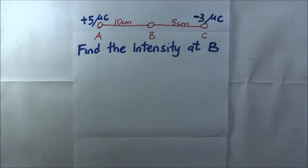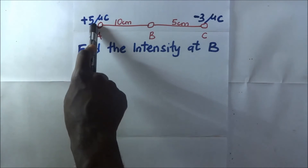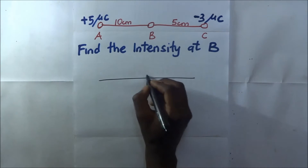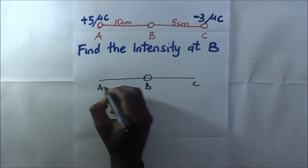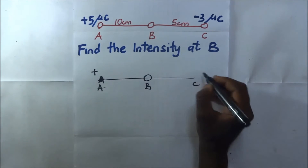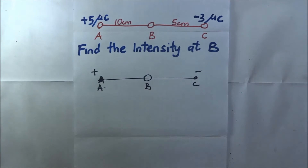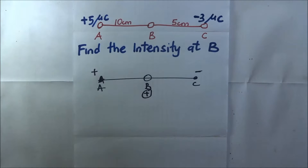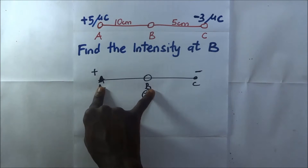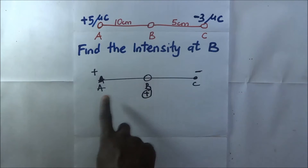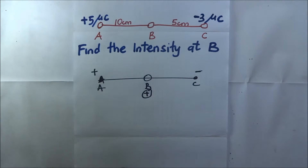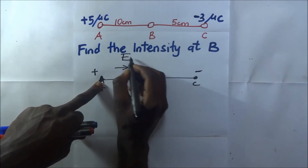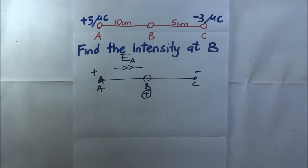Now let's find the intensity at point B in this next question. We have point A with a positive five microcoulombs charge and point C with a negative three microcoulombs charge. Redrawing the diagram, we have point B in the middle, point A on one side, and point C on the other. A is positively charged and C is negatively charged, and we shall assume that B is a positive test charge.